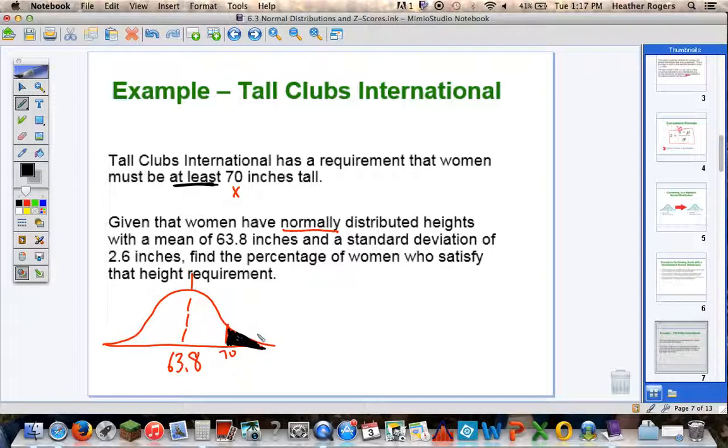We want to talk about, if we're talking at least 70 inches tall, we're talking about 71 inches, 74 inches, that is all to the right of 70 inches. So this is the probability, this is the area that I want to find. To do that, I have to have a z-score that relates to 70 inches when I have a mean of 63.8 and a standard deviation of 2.6. So I use my conversion.